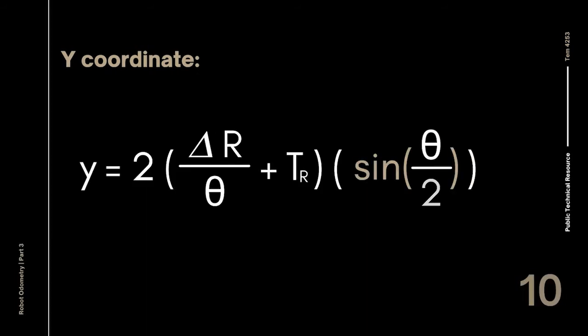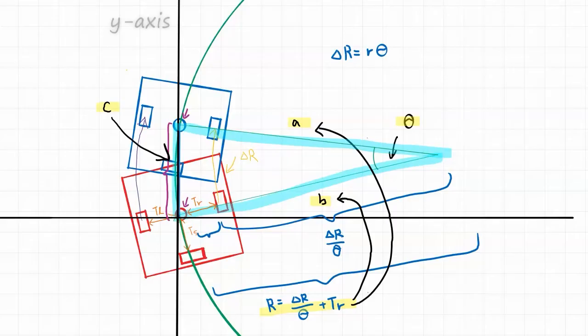So there we have it. We have derived the equation to calculate the y-coordinate of our position vector. Now let's work on calculating the x-coordinate. Well if we go back to our diagram here, we see that since we have shifted the coordinate system so that the chord line c over here is parallel to the y-axis, there isn't really any change in the x-position. And the x-vector seems to be just zero.